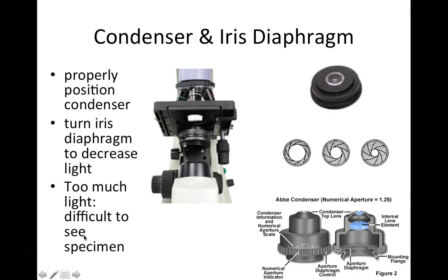The condenser and iris diaphragm are below the stage. When properly positioned, we are able to focus the cone of light coming from the illuminator in a perfect spot to illuminate our specimen. We always want to raise the condenser to its highest position just under the specimen. We decrease the light intensity with the iris diaphragm at the base of the condenser itself. The condenser iris diaphragm can be adjusted by turning a notched wheel clockwise or counterclockwise to open and close it.